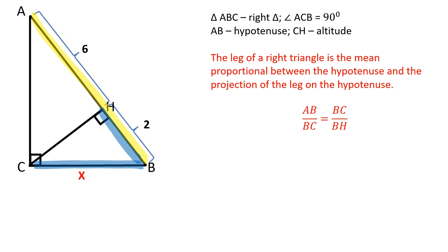AB over BC is equal to BC over BH. The projection of the leg is that segment of the hypotenuse which is adjacent to this leg. BH is the projection of BC and AH is the projection of AC.